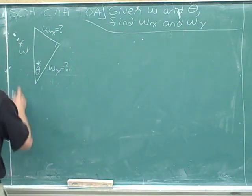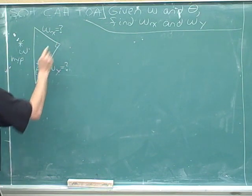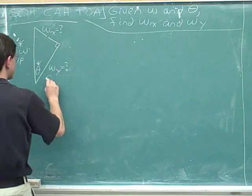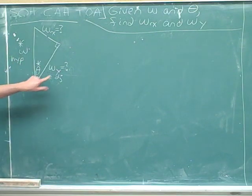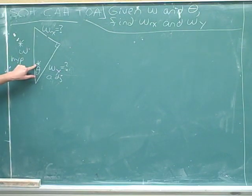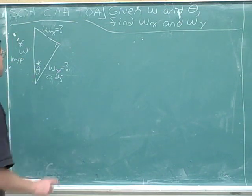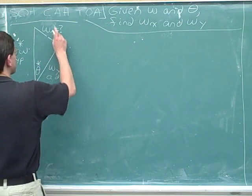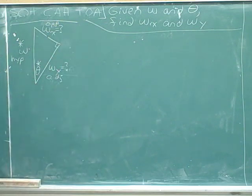Let's label the sides. The hypotenuse is opposite the right angle. The adjacent side is w sub y — you can see that w sub y is adjacent to the angle we've marked with the asterisk — and w sub x is opposite to the angle we've marked with the asterisk, so this is the opposite side.